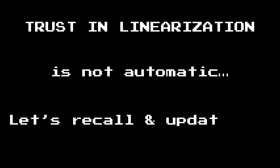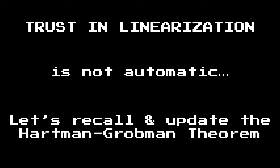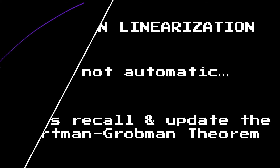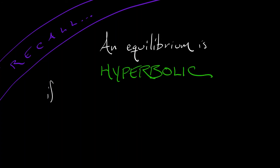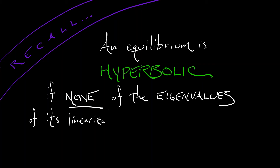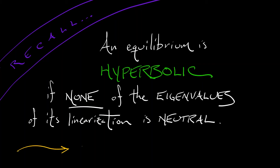We've got linearization down, but you can't necessarily trust the linearization to accurately represent the dynamics. Recall the Hartman-Grobman theorem from volume two that we used to validate a linearization. The key definition was an equilibrium being hyperbolic: an equilibrium is hyperbolic if none of the eigenvalues of its linearization is neutral — meaning there's some combination of stable and unstable eigenvalues.